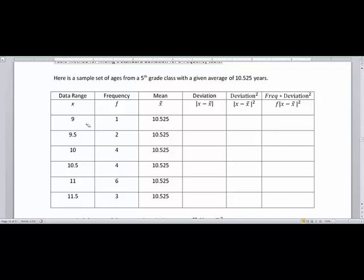Notice that you have some ages of 9, 9.5, 10, 10.5, 11, and 11.5. Since we don't actually have the actual data points, they are giving us frequency just like we did on that midpoint chart a while ago.